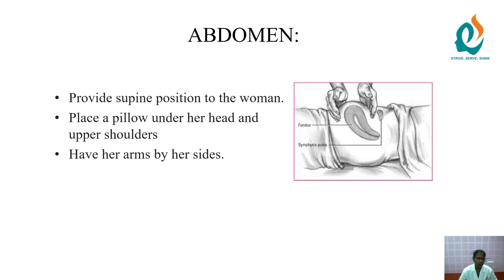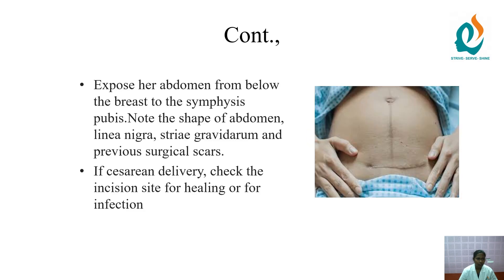For uterus assessment, provide the supine position to the mother with a pillow under the head and upper shoulders, arms at her side. Expose the abdomen from below the breast to the symphysis pubis. Note the shape of the abdomen, linea nigra, striae gravidarum, and any surgical scar. For cesarean delivery, check the incision site for healing or any indication of infection.